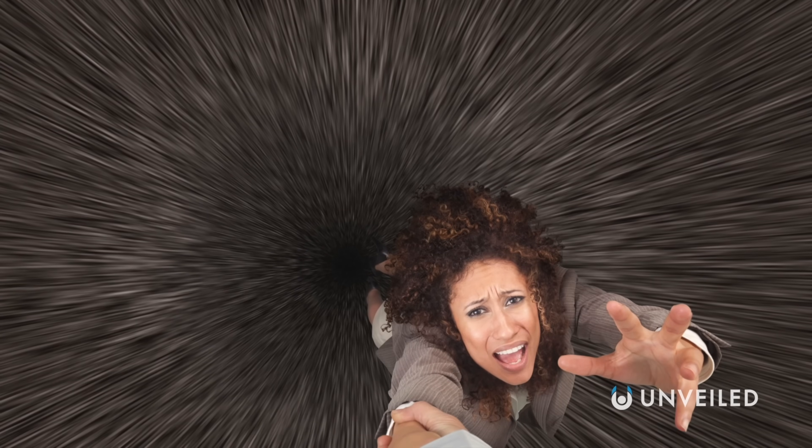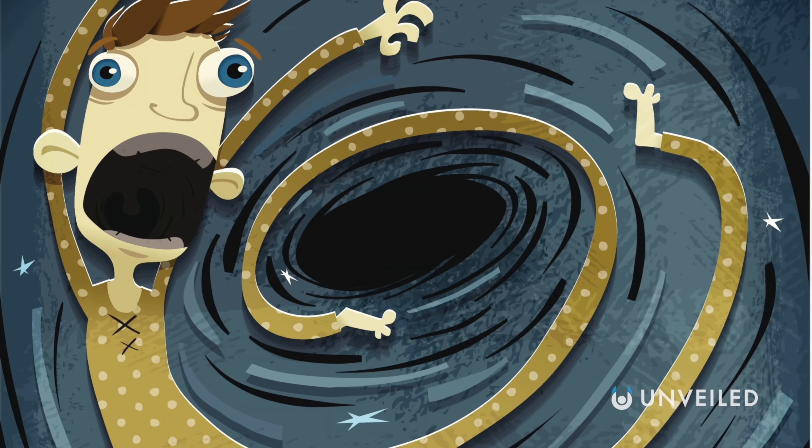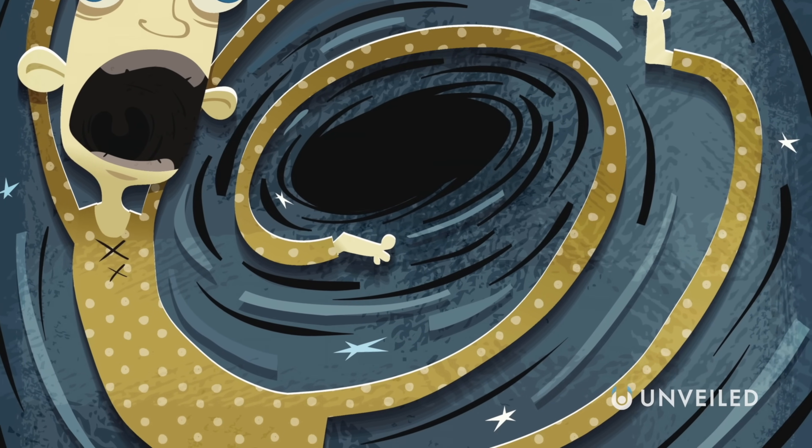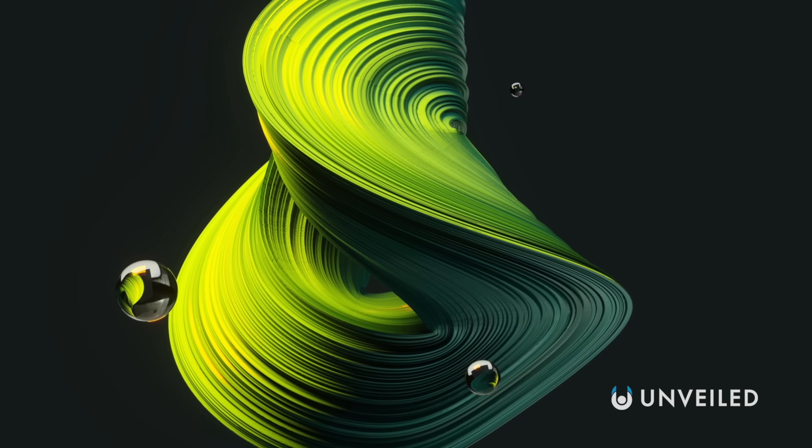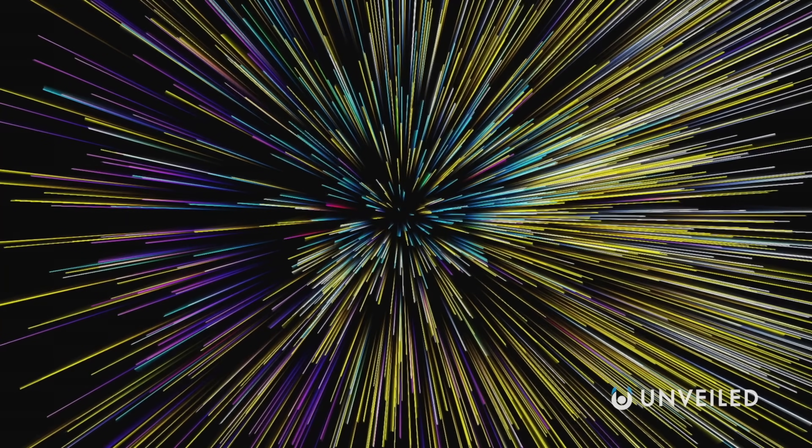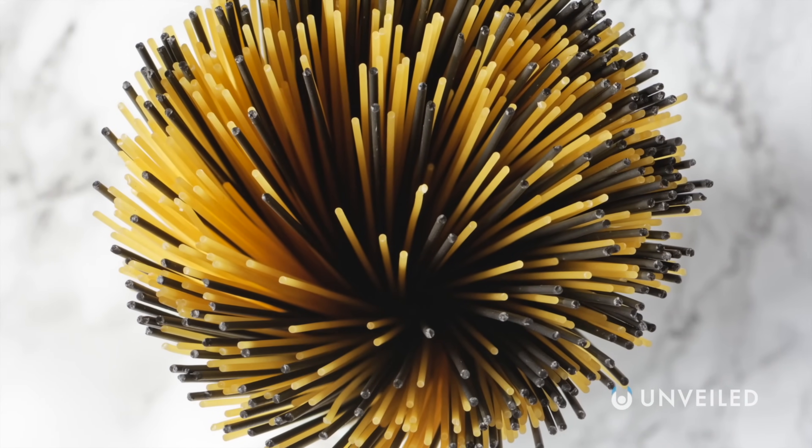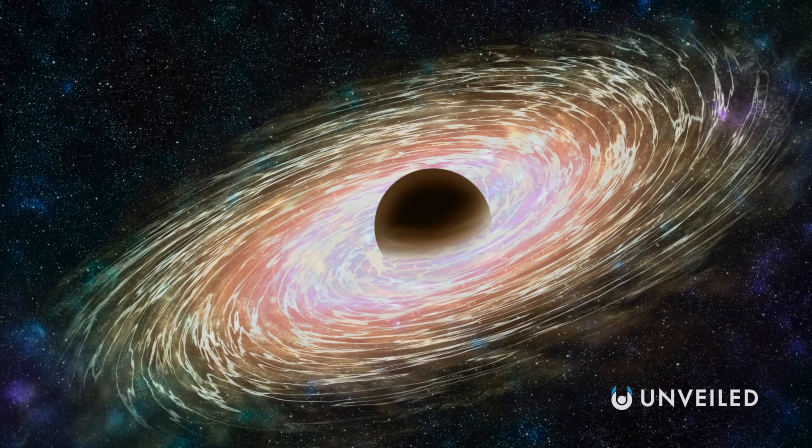When you fall into a black hole, the force of gravity acting on your feet is so much stronger than the force of gravity acting on your head that you get stretched out, infinitely stretched out, until your entire body is reduced to one long, single string of atoms, which ultimately gets crushed down into the singularity like literally everything else. This process is called spaghettification, and for a black hole to appear here, it would happen to all of us all at once.